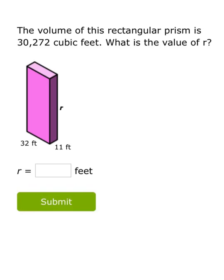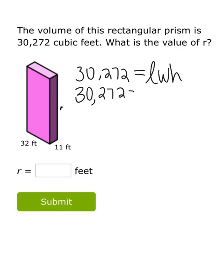Same thing. We know the volume of this rectangular prism is 30,272 cubic feet, and it's going to be equal to the length times the width times the height. We know the length and width, but we don't know the height of this prism. Let's fill in what we do know. I know the length is 32, the width is 11, but I don't know the height, which they're saying is R. So instead of using H, we could just call that R.